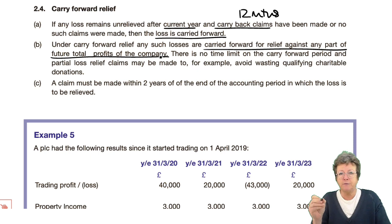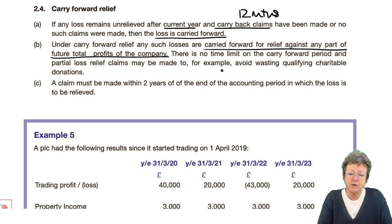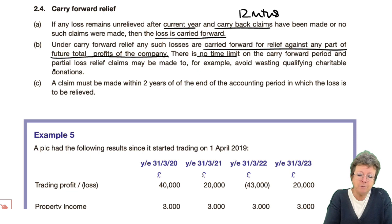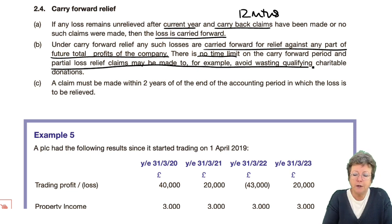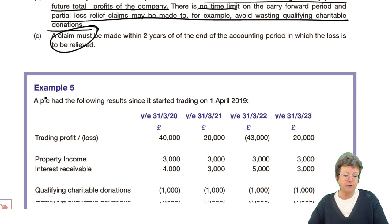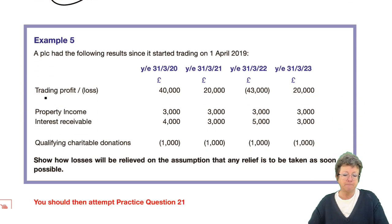This is different from individuals. There is no time limit. You can make partial claims to avoid wasting your QCDs, and you must make a claim within two years of when the loss is relieved.